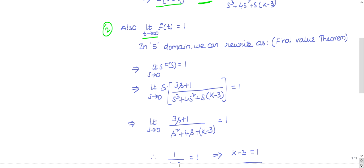What final value theorem states is: if you want to find f(∞), which is the final value, you can find it as limit t tends to infinity of f(t). This can be found easily in the s domain as the same as limit s tends to 0 of s times the Laplace transform of f(t).